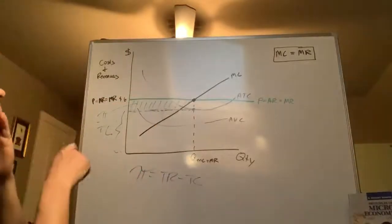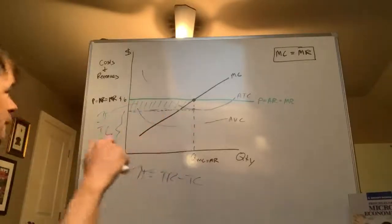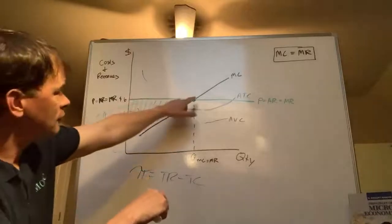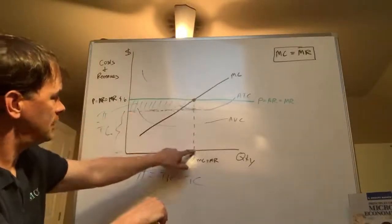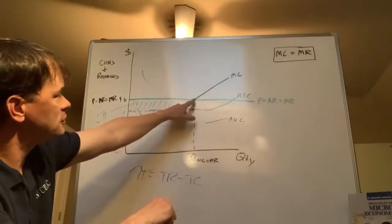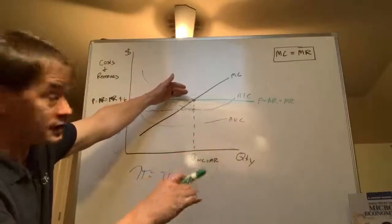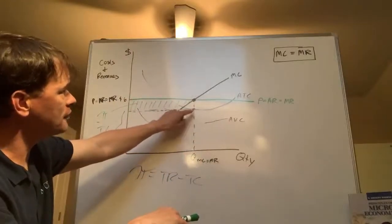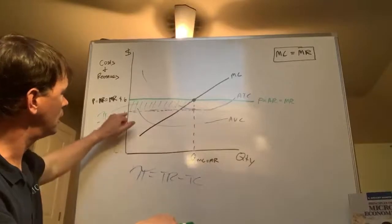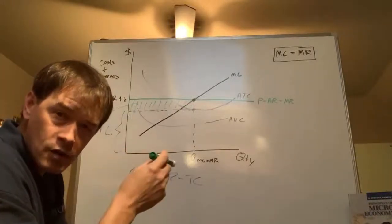A lot depends on where marginal revenue and marginal cost intersect relative to average total cost. If you keep costs down and revenues up, you make more profit. On the homework, when dragging a rectangle for total revenue, go to where marginal cost equals marginal revenue — that's one corner. For total cost, drop down to average total cost and mark the corners there. The difference between those two boxes is profit.